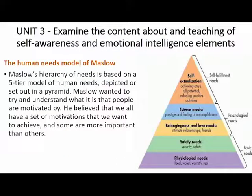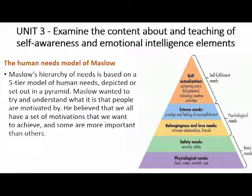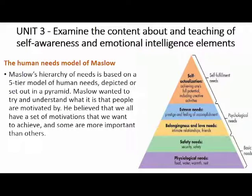We move on to Unit 3 where we look at the human needs model of Maslow. It is a five-tier pyramid model about how we understand people's motivations. Maslow believed we all have motivations we want to achieve, but to do so we need certain needs in place. At the bottom are physiological needs — water, food, warmth, and rest. The second tier is safety needs, including security, having a house, and feeling safe at school or at home.